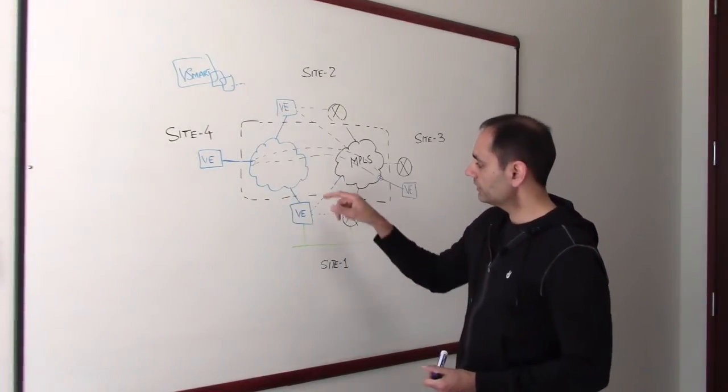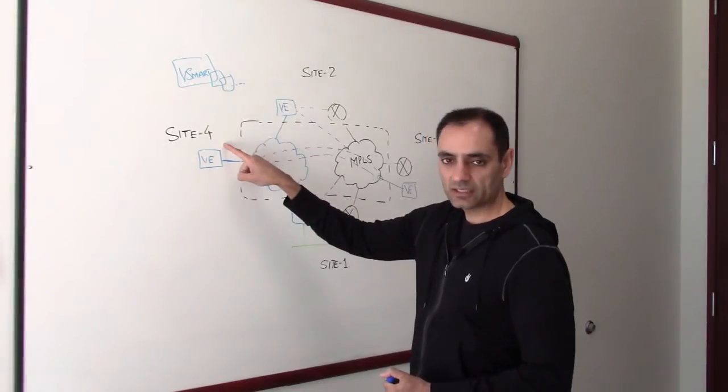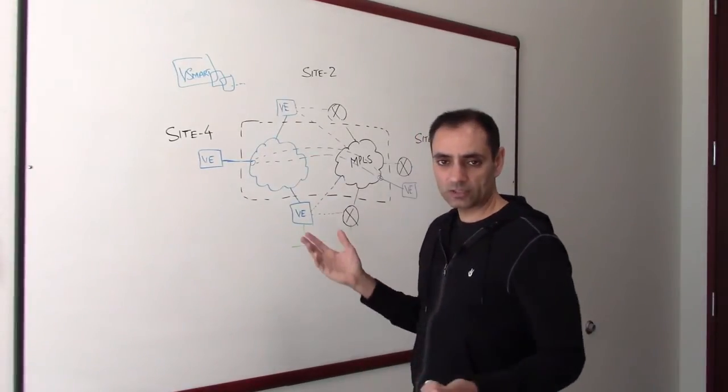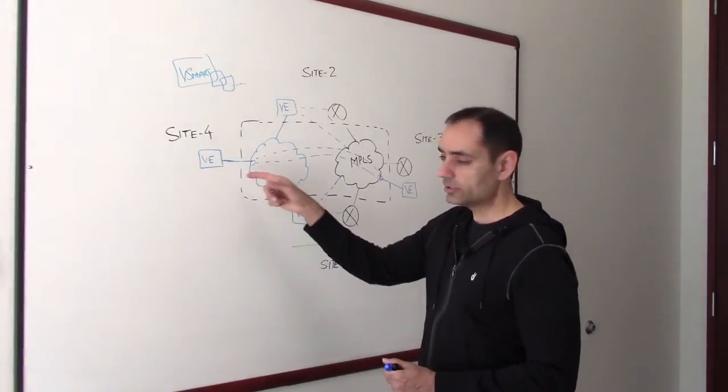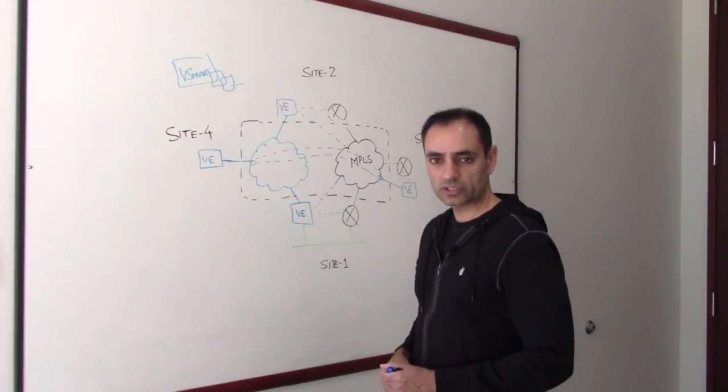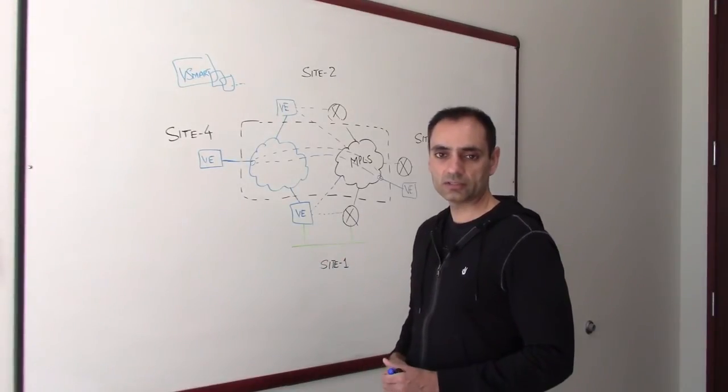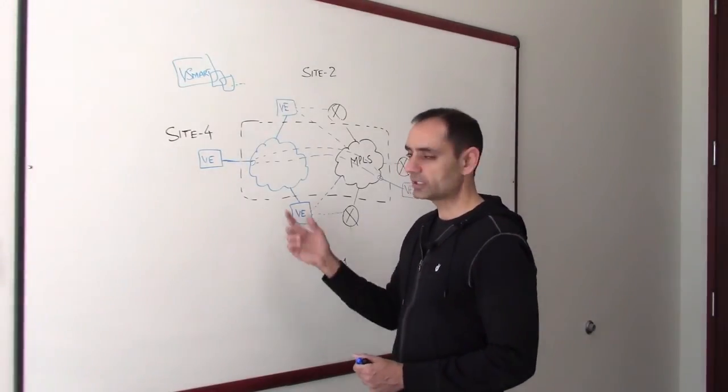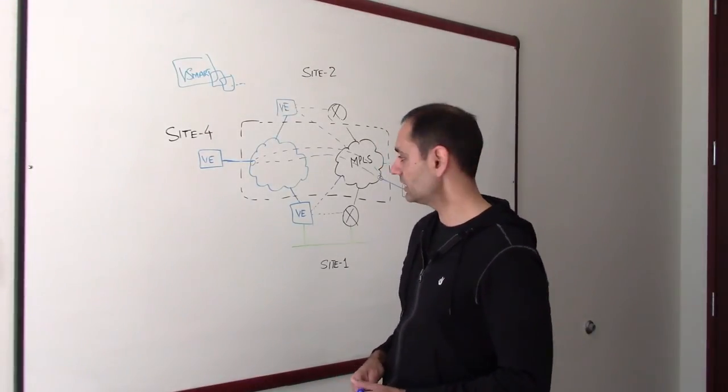And also, if you did not want direct connectivity between site 4 and site 3 and say you wanted this to go through a certain service such as a firewall, then you can also introduce those services using our service chaining functionality. You can get more information on service chaining by referring to my other video on service chaining.